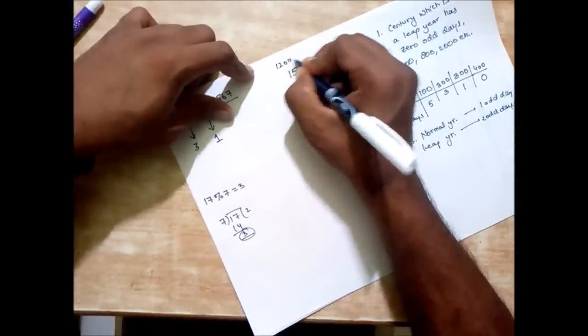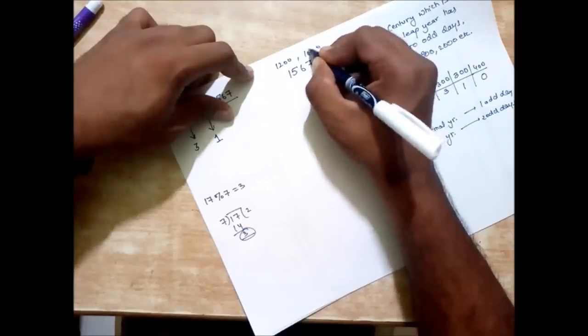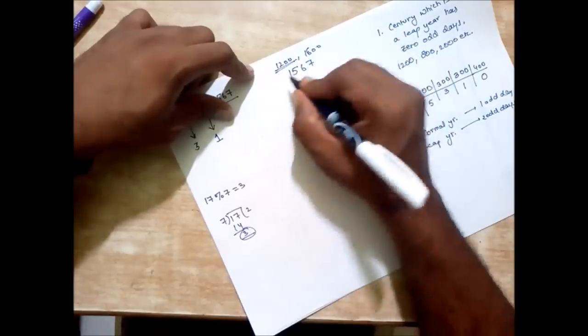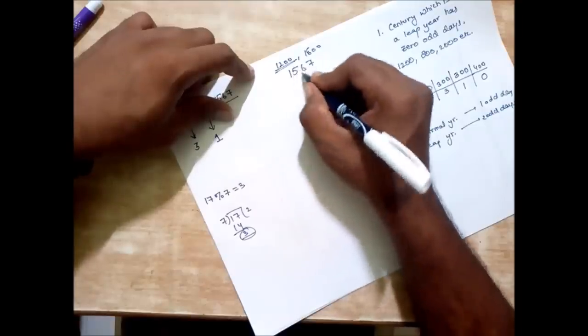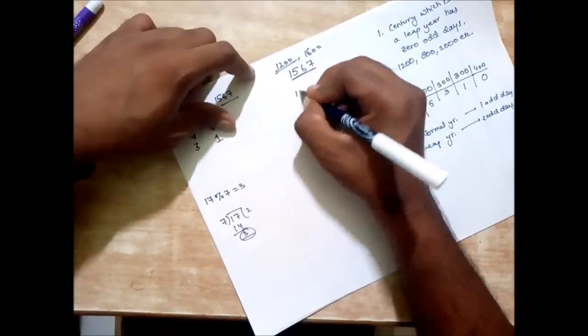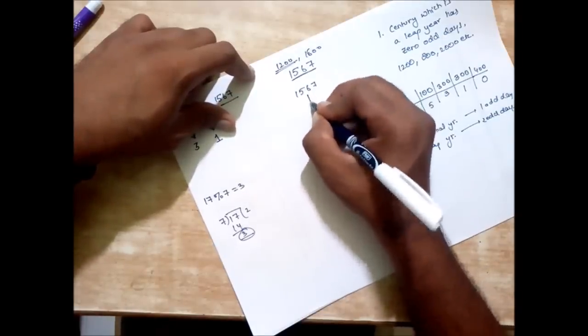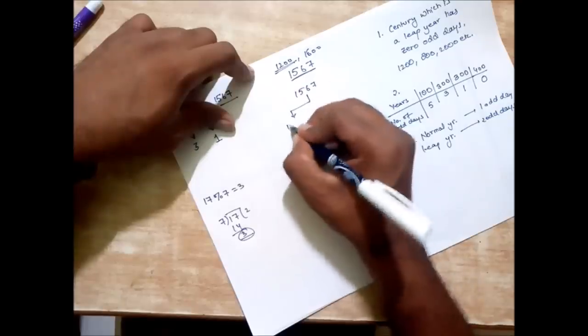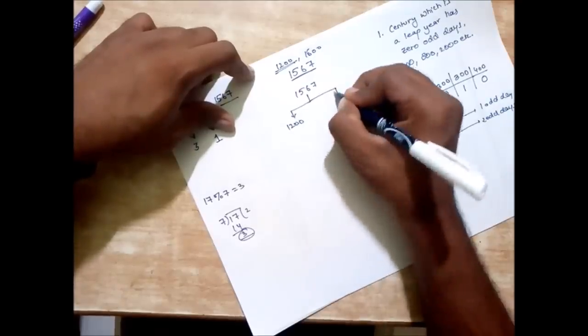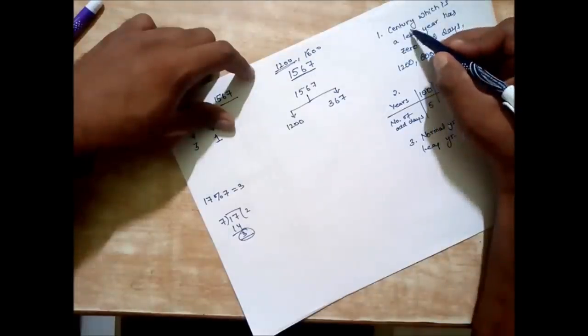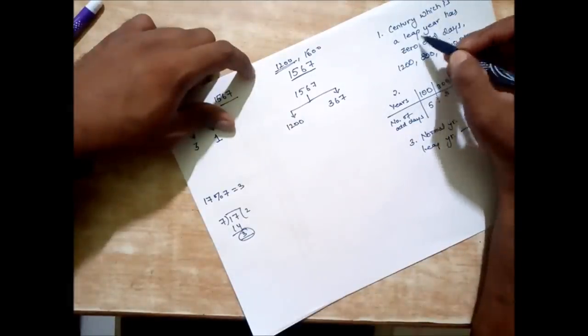So I can write the year before this is 1200 and after this is 1600. So this is the largest year which is a century year and a leap year according to this. So we subtract it. 1567 can be written as the sum of 1200 and 367.